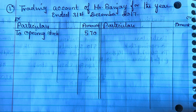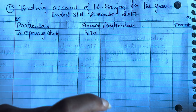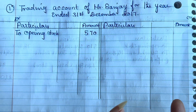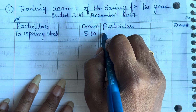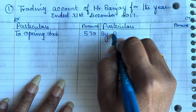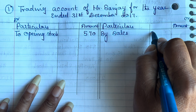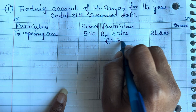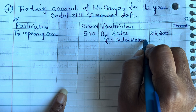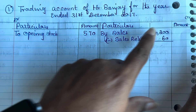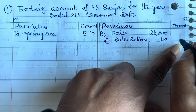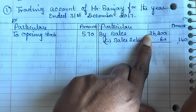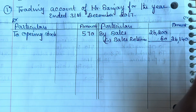Next, sales. Sales of 26,200 have been given. Since sales bring cash in, it is income, and income goes on the credit side. So write sales on the credit side. Write 26,200 in the inner column because sales return of 60 has also been given — you have to subtract sales returns from sales in the inner column. So sales 26,200 minus sales return 60 gives 26,140.